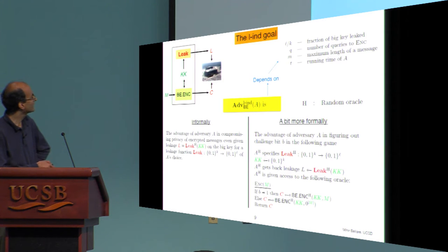And that corresponds to function of the key of the adversary's choice. A little more precisely in our usual cryptographic games, the adversary is aiming to figure out a randomly chosen challenge bit in the following process. We're in the random oracle model, so it gets access to a random oracle. And the first thing it does is specify a leakage function. Importantly, the leakage function itself has access to the random oracle.